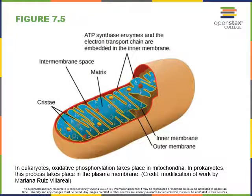The electron transport chain and chemiosmosis to produce ATP occur in the mitochondria. There are proteins embedded in the inner mitochondrial membrane that are the electron transport chain and ATP synthase that produces the majority of ATP coming from the oxidation of glucose.